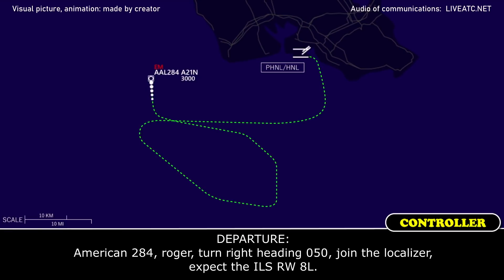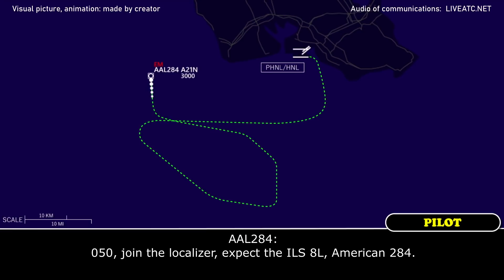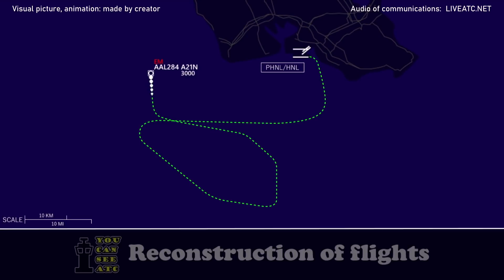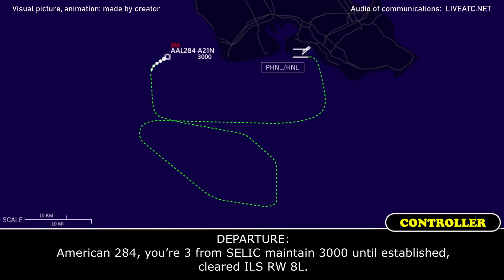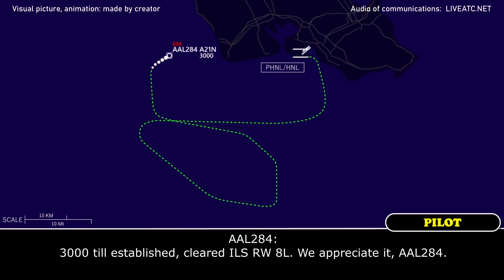American 284, roger, turn right heading 0-5-0, join the localizer, expect the ILS R-8-1. 050, join the localizer, expect ILS — stand by, American 284. American 284, you're cleared from service, maintain 3,000 until established, cleared ILS R-8-1. 3,000 to the top, ILS 8-left, we appreciate it, American 284.